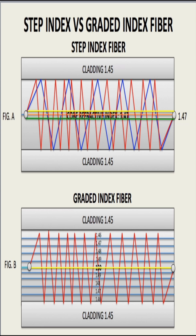In many cases, the light received by the receiver within the allotted transmission time is not enough to clearly indicate if the transmission pulse is a one or a zero, and this would result in an error. This is what we refer to as modal dispersion.